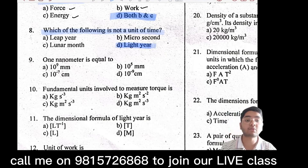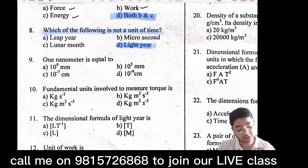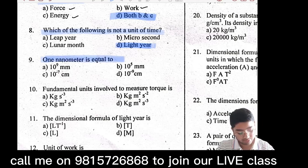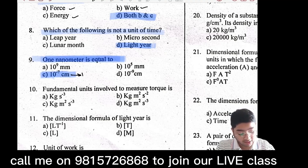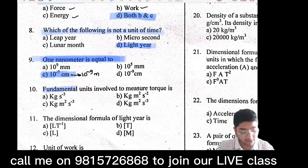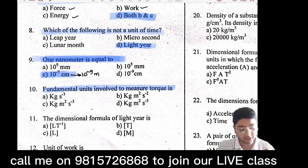Light year is the distance travelled by light in one year — it is a distance, not a unit of time. One nanometer is 10⁻⁹ meter, also written as 10⁻⁷ centimeter. The fundamental units involved to measure time — and next: torque.